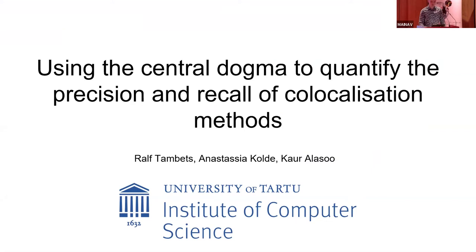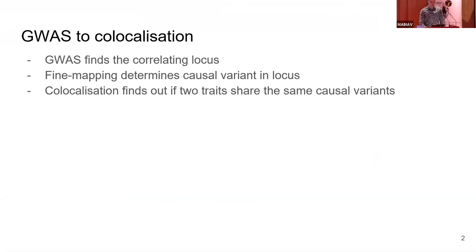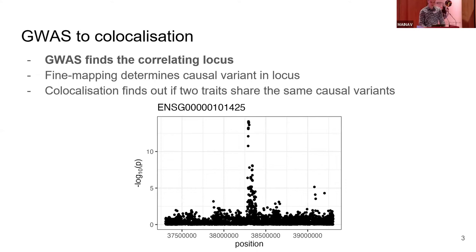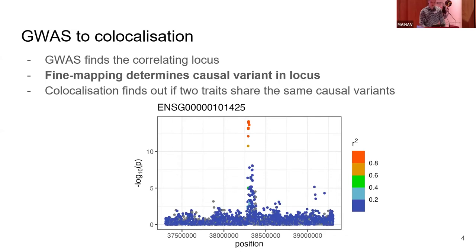During this presentation I'll give a brief summary of what co-localization is, some tools it can be assessed with, why our research group believes considering the central dogma is helpful in co-localization research, and the results we've obtained. The purpose of co-localization analysis is finding out whether two different traits are caused by the same variants in a single genetic region — a fundamental approach for identifying candidate genes that causally mediate complex trait associations. Co-localization analysis should be carried out on fine-mapped data, usually preceded by GWAS to find the correlated locus and fine mapping to find causal variants.